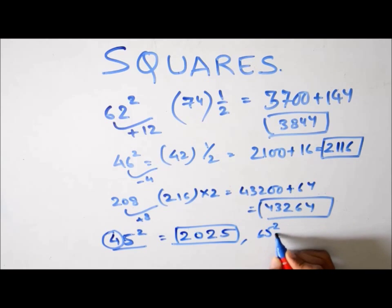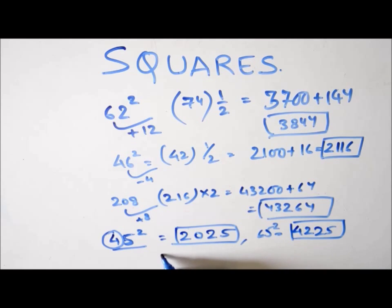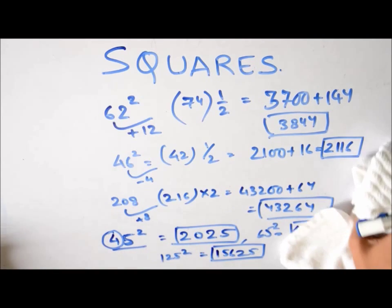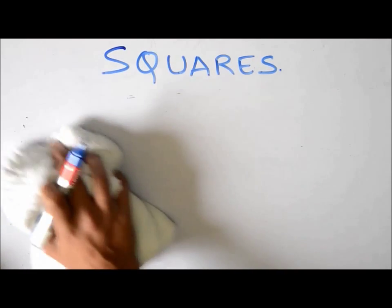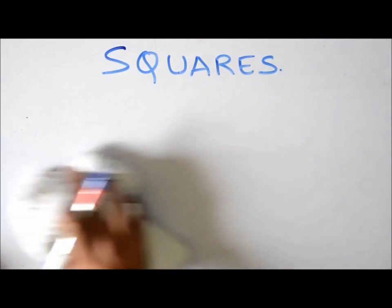Suppose it is 65 square. Again 5 square 25. 6 into 6 plus 1, 7. 42. Suppose say 125 square. 5 square 25. 12 into 13 is 156. So this is how you can calculate the squares of numbers ending with 5. So by using these techniques you can easily calculate squares of all numbers within seconds. And this will reduce the calculation time.